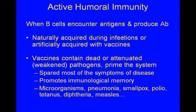Active humoral immunity is when B cells encounter antigens and produce antibodies on their own. You can naturally acquire it during infections or artificially through vaccines. A vaccine contains a dead or attenuated — weakened — pathogen and primes the system. You've got live vaccines and dead vaccines. With live vaccines, you're not getting the whole virus — you're getting part of it, so you don't get full-blown sickness. You're spared most of the symptoms.